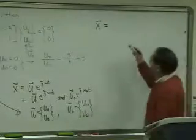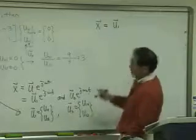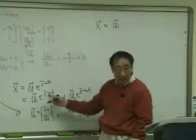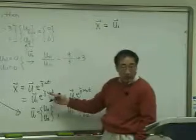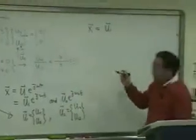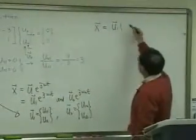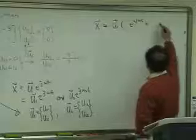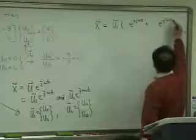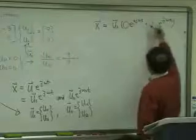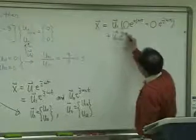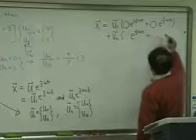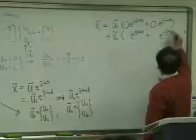So I can say this is u1. And it notes that this can be plus and minus. So I write this u1 exponential plus j omega 1t plus exponential minus j omega 1t. There is a sum coefficient and plus u2 exponential plus j omega 2t plus exponential minus j omega 2t.